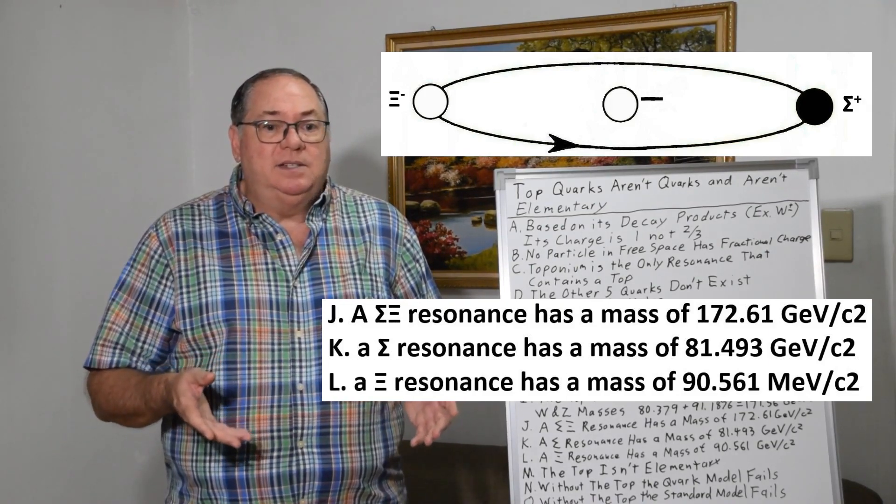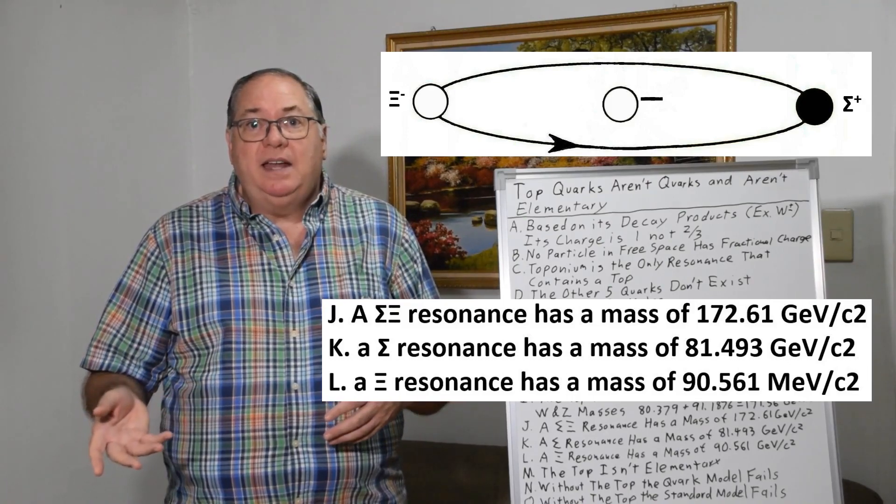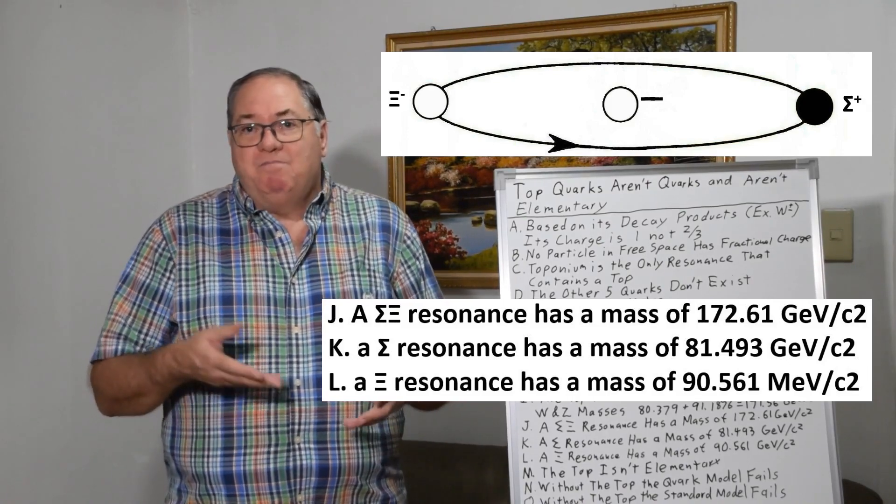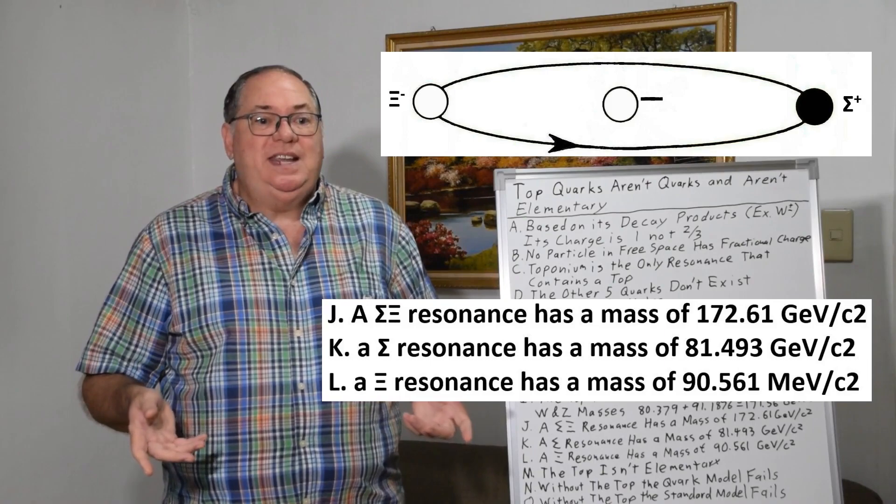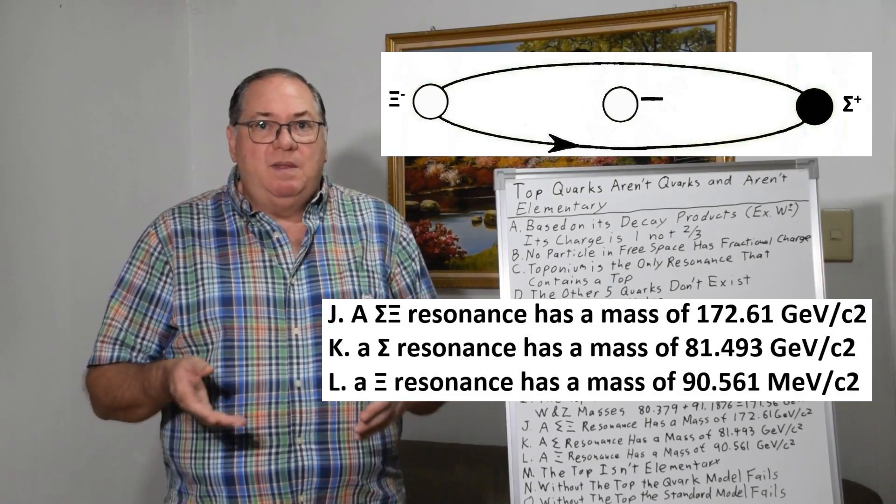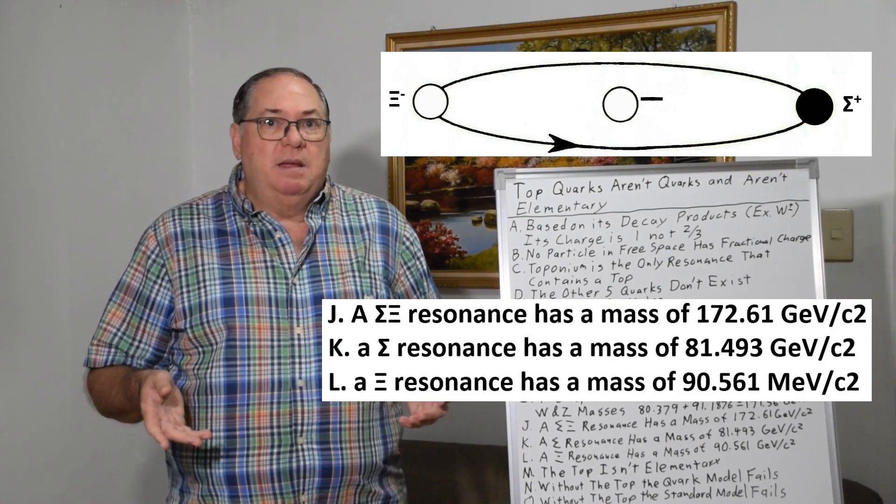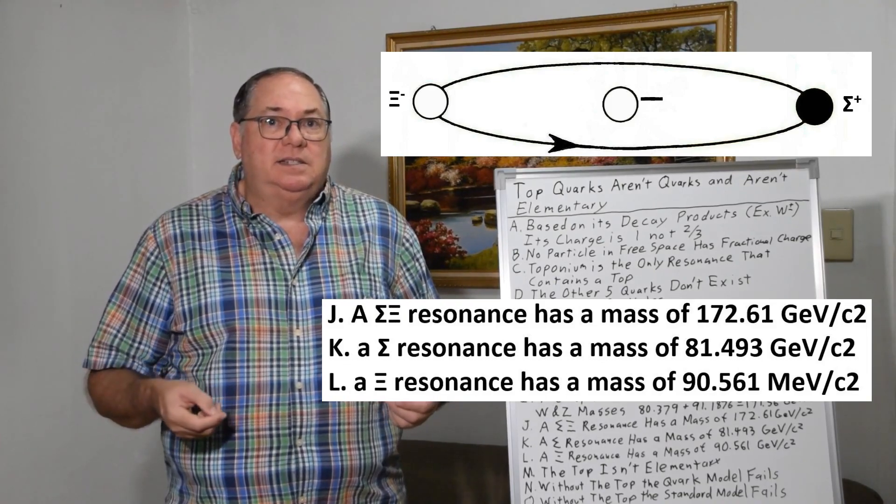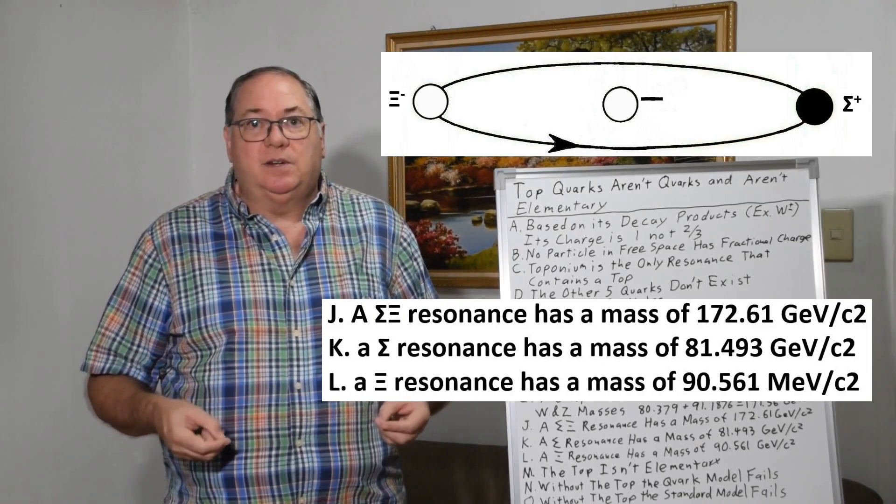And then individually, a sigma resonance can have a mass of 81, and the xi resonance by itself can have a mass of 90, which are essentially the masses of the W and Z. So they appear to be baryons in a resonance in relativistic orbits.